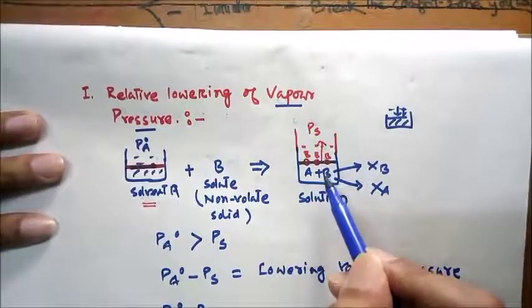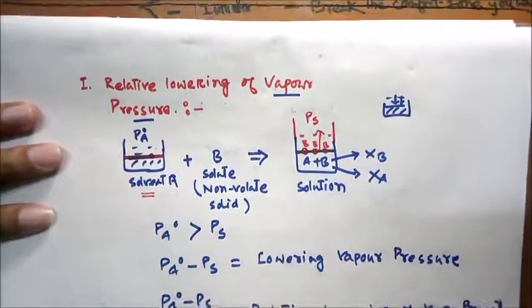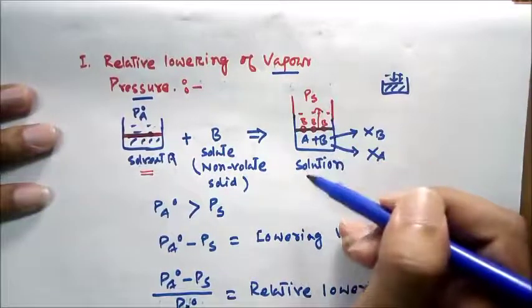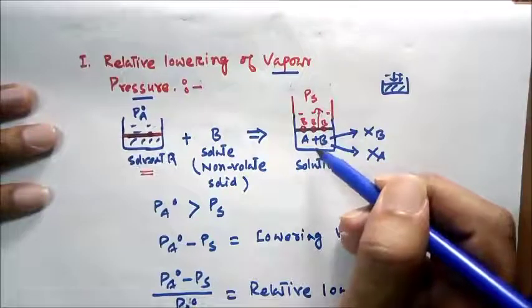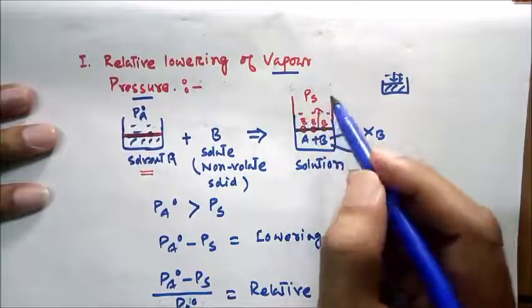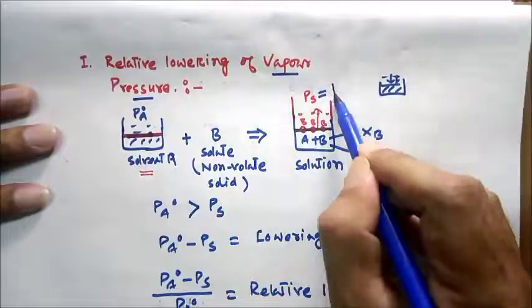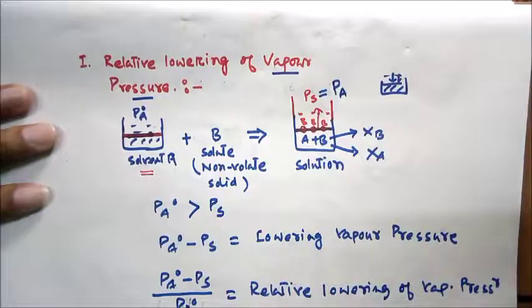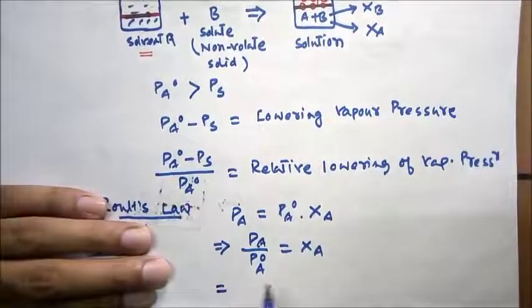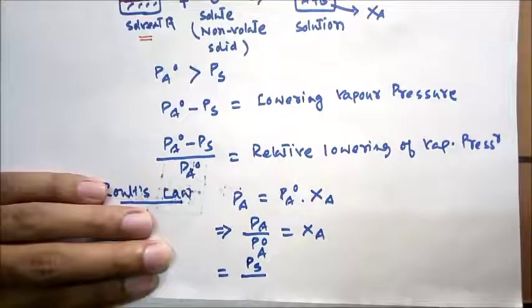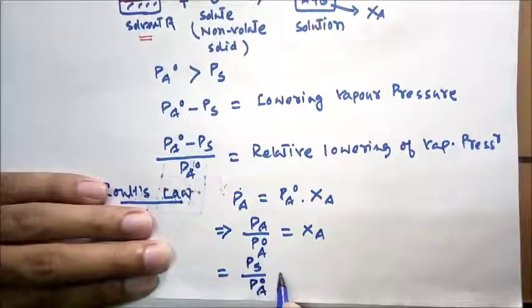All the vapor pressure here is exerted by the solvent part only, because the solute is a non-volatile solute and cannot undergo vaporization. So the only molecules that can go into the vapor state are the solvent molecules. Therefore, the vapor pressure of the solution equals the vapor pressure of the solvent component. We can write: Ps / Pa0 = XA, the mole fraction of the solvent.